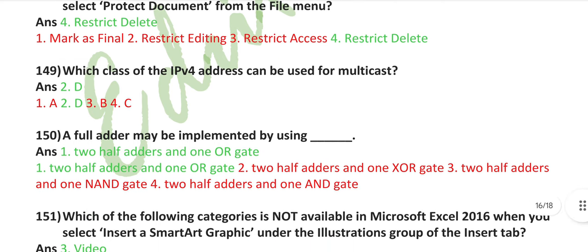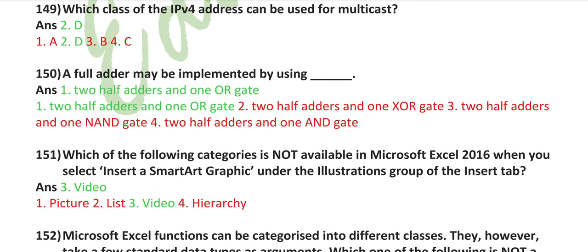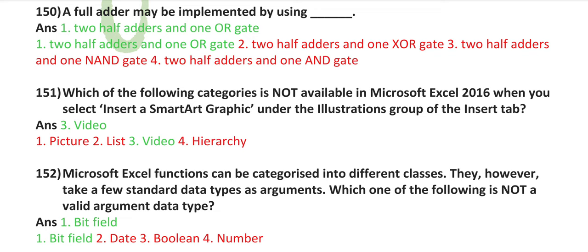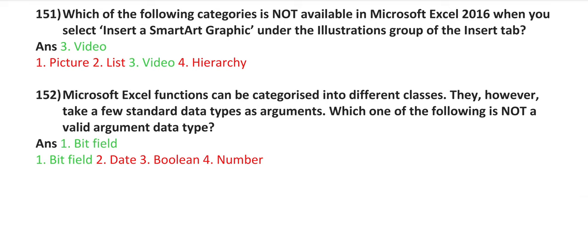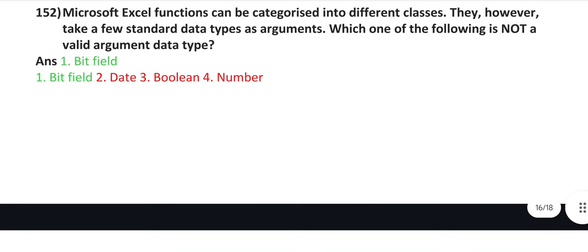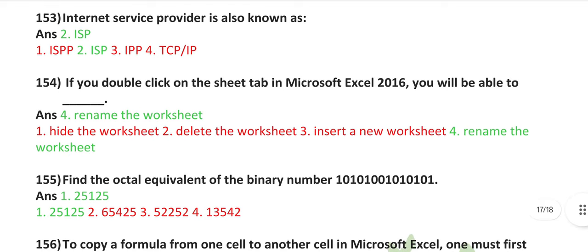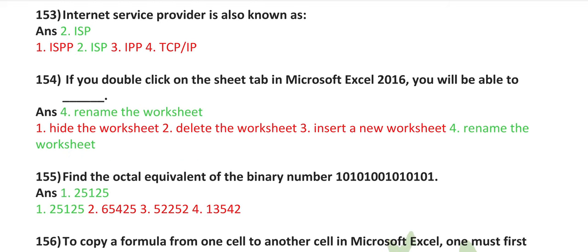Which class of the IPv4 address can be used for multicast? Class D. A full adder may be implemented by using two half adders and one OR gate. Which of the following categories is not available in Microsoft Excel 2016 when you select insert a smart art graphic under the illustrations group of the insert tab? Video. Microsoft Excel functions can be categorized in different classes. They however take a few extended data types as arguments. Which one of the following is not a valid argument data type? Bit field. Internet service provider is also known as ISP.